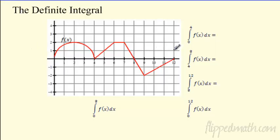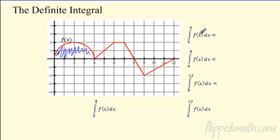We're not going to use rectangles as much. Here's my integral from 0 to 4 — from the lower bound to the upper bound of this function. Here's a graph of my function, and I want to integrate from 0 to 4. I'm talking about the area under the curve from here to here. In this case, this is going to be a semicircle — one of our basic shapes we can find.